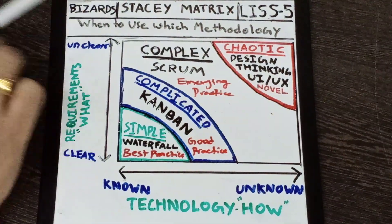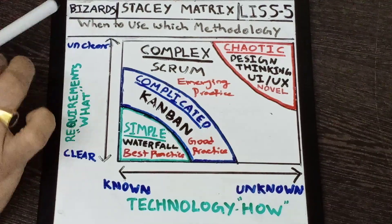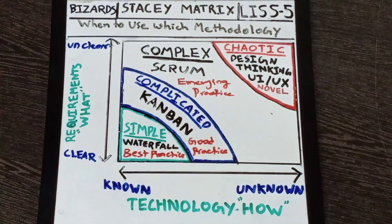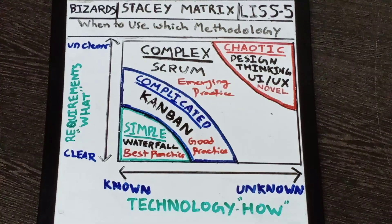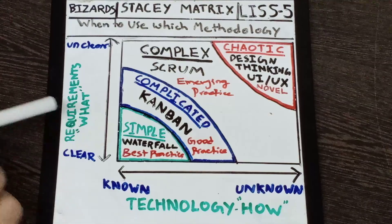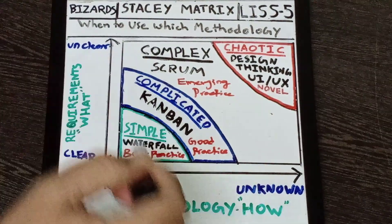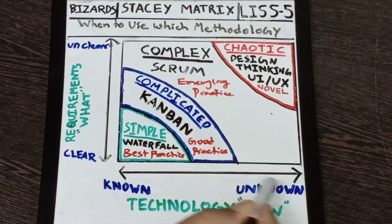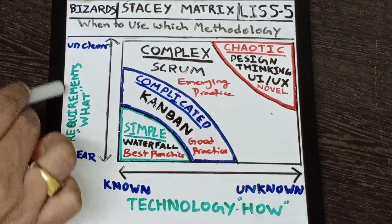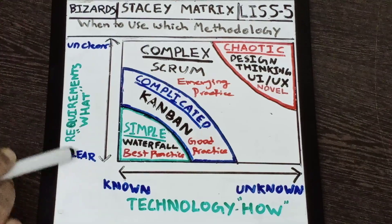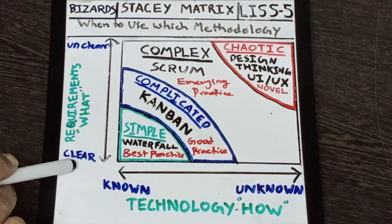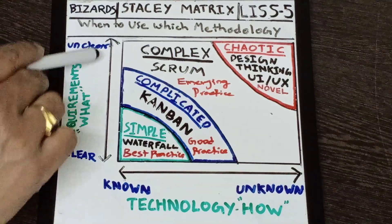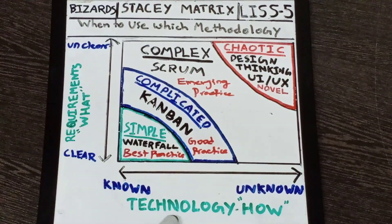This is what we call the Stacy Matrix. Stacy is a professor in the UK, and he came out with a kind of matrix that helps us pick or choose which methodology is appropriate for a given project or situation. We have two axes: one axis talks about technology or the output, and the scale varies from known to unknown. On the other side, we have requirements — the 'what' part — and the degree varies from 100% clear to 100% unclear.